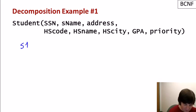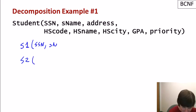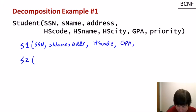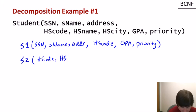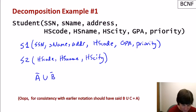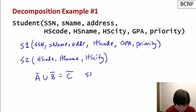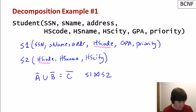In the first decomposition of student into S1 and S2: S1 gets social security number, name, address, high school code, GPA, and priority. S2 gets high school code, high school name, and high school city. The high school information is separated into a separate relation. This is a correct decomposition — all attributes are present, and S1 join S2 on the high school code value will equal the original student relation.